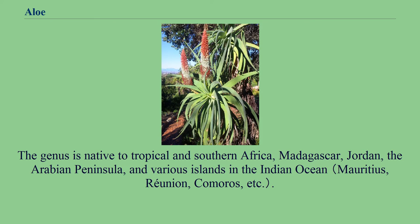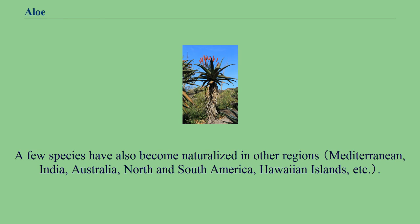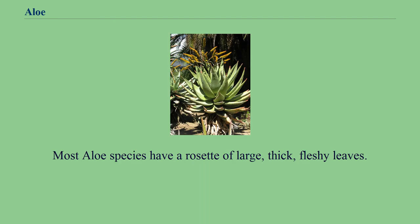The genus is native to tropical and southern Africa, Madagascar, Jordan, the Arabian Peninsula, and various islands in the Indian Ocean. A few species have also become naturalized in other regions. Most aloe species have a rosette of large, thick, fleshy leaves.